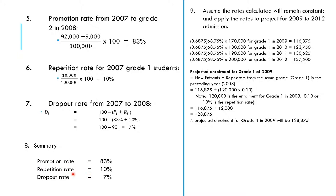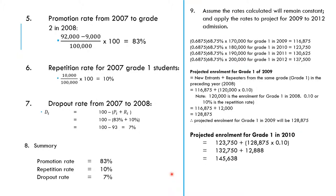The new entrants for 2009 are 116,875. The repeaters are 10% of the 2008 Grade 1 enrollment of 120,000, which is 12,000. So the projected enrollment for Grade 1 in 2009 is 116,875 + 12,000 = 128,875.